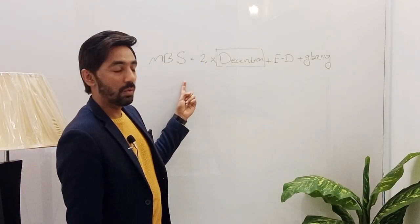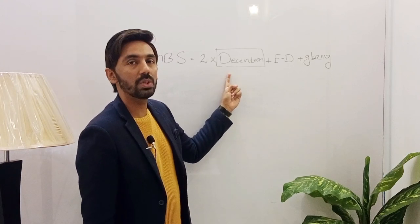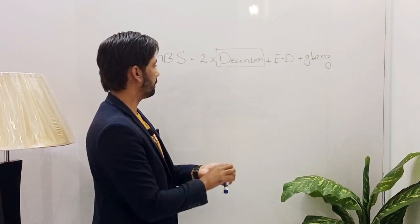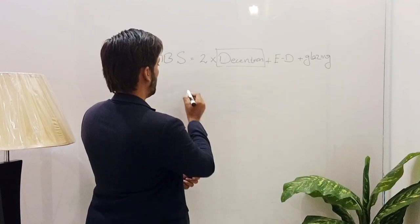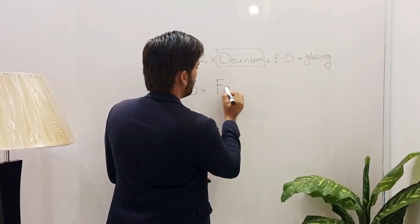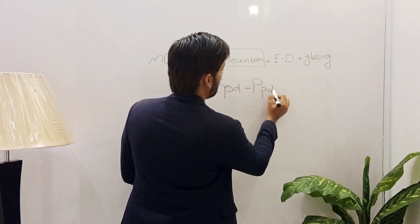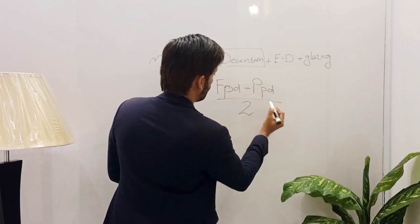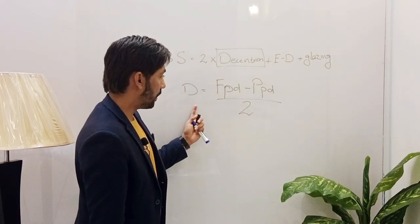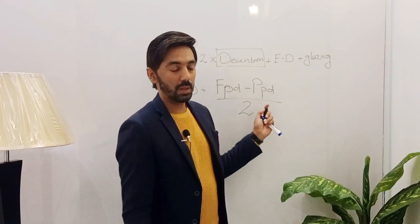Before learning about the minimum blank size, we must have detailed knowledge about decentration. The formula for decentration is: frame PD minus patient PD, divided by 2. First, we will learn about the patient's PD.